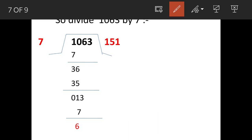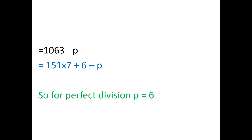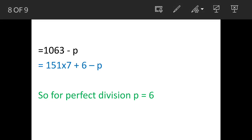So hope up to this we are clear. So we write 1063 as 151 times 7 plus 6 minus p.